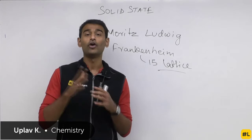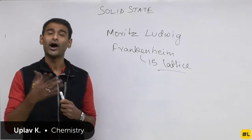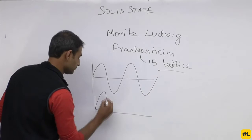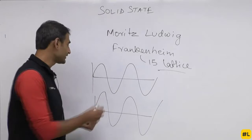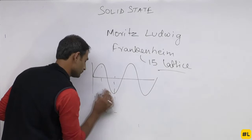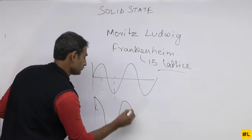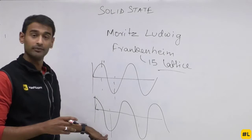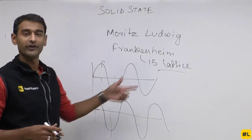Someone asked what 'out of phase' means. If two waves are going to the top point at the same instant and their bottoms are also at the same instant, they are in phase. But if when one wave is at its top, the other is at its bottom, the top interferes with the bottom and both go for destructive interference. These waves are called out-of-phase waves.